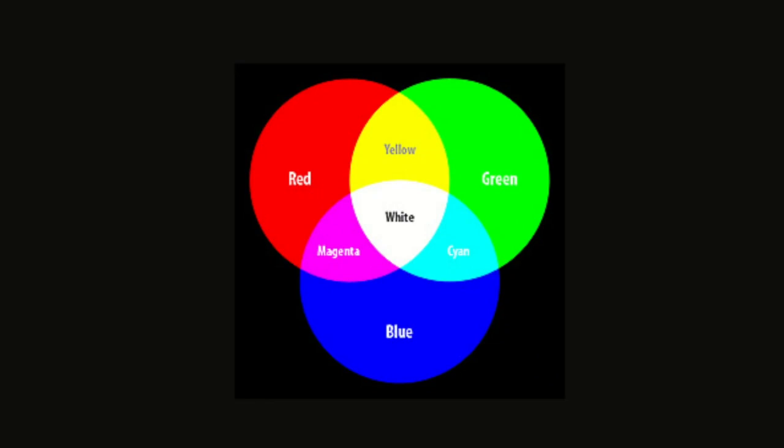With additive color mixing, when equal parts of the three primary colors of the additive color mixing, as you can see on the color wheel, red, green, and blue are combined, white light is created. When red and green light is combined, it makes yellow light. When green and blue light is combined, it makes cyan light. And when red and blue light is mixed, it creates magenta light.